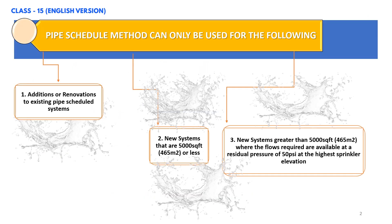As you can see on your screen, the pipe schedule method can only be used for the following three points. Number one: additions or renovations to existing pipe schedule systems. Number two: new systems that are 5,000 square feet (465 square meters) or less. And number three: new systems greater than 5,000 square feet or 465 square meters where the flows required are available at a residual pressure of 50 psi at the highest sprinkler elevation.